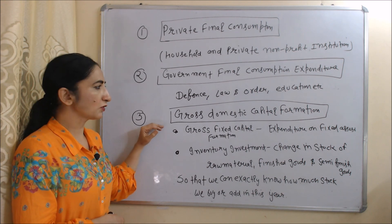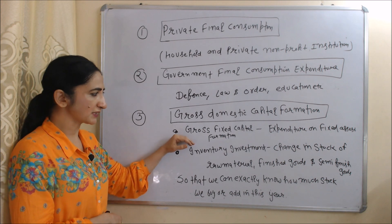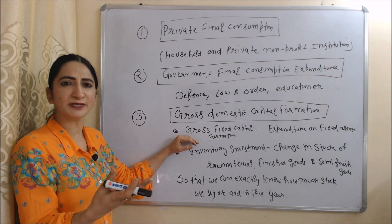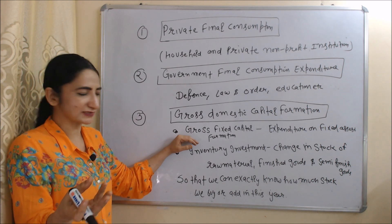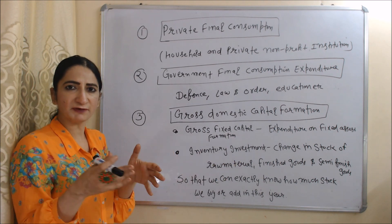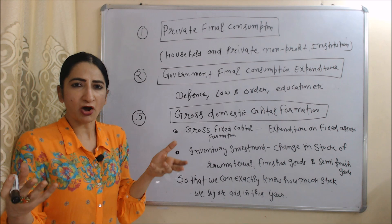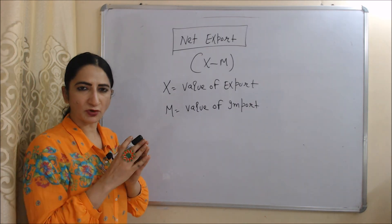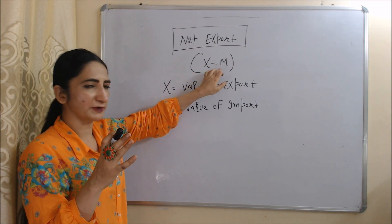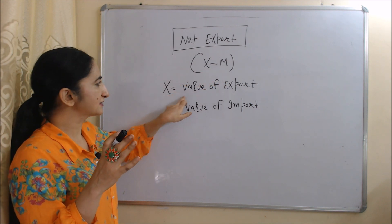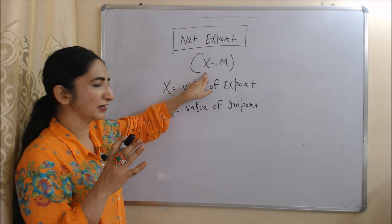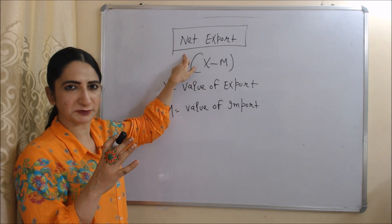Gross Domestic Capital Formation includes gross fixed capital formation — expenditure on fixed assets like machines, tools, equipment — and inventory investment, which basically sees the change in stock of raw material, finished goods, and semi-finished goods, so we can know exactly how much stock was added or bought in the year. Last component is net export, which is the difference between value of export and value of import. X is value of export and M is value of import; X minus M equals net export.